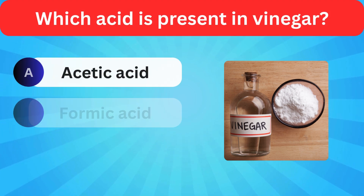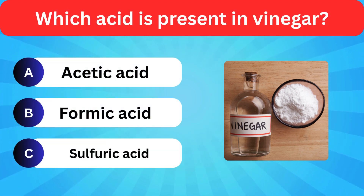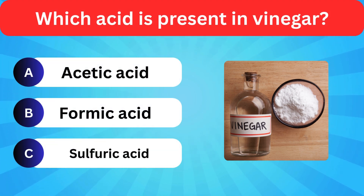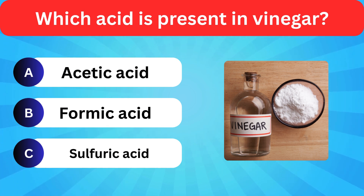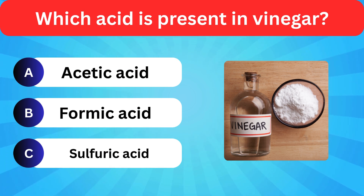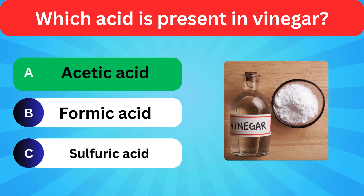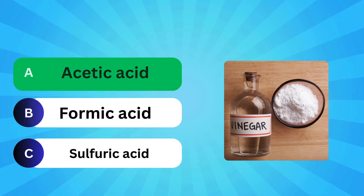Which acid is present in vinegar? Options: Acetic acid, Formic acid, Sulfuric acid. Correct answer is acetic acid.